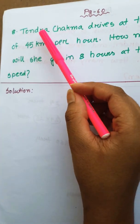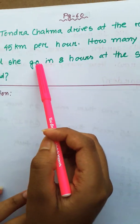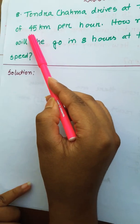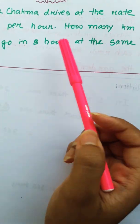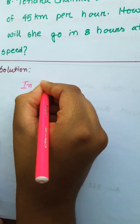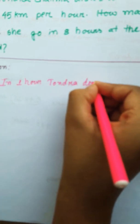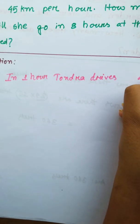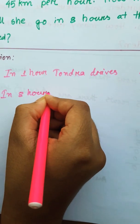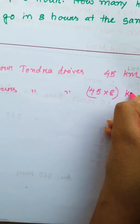Our next question is: Tondra Chakma drives at the rate of 45 km per hour. How many km will she go in 8 hours at the same speed? In 1 hour Tondra drives 45 km. Therefore, in 8 hours Tondra drives 45 x 8 km.